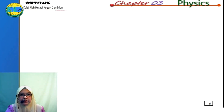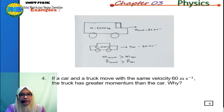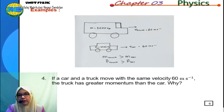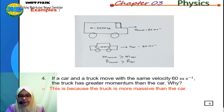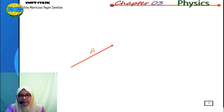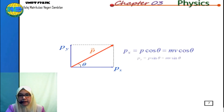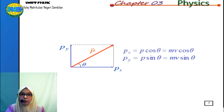Example four: a car and a truck move with the same velocity of 60 meters per second. The truck has greater momentum than the car because the truck is more massive. Since momentum has direction, we can resolve it into x, y, and z components. However, in the matriculation syllabus, we only consider two components: x and y.